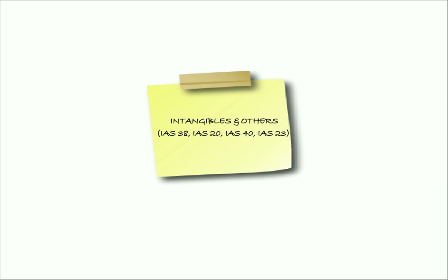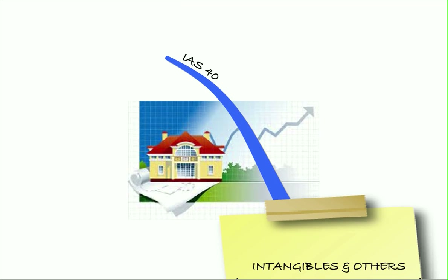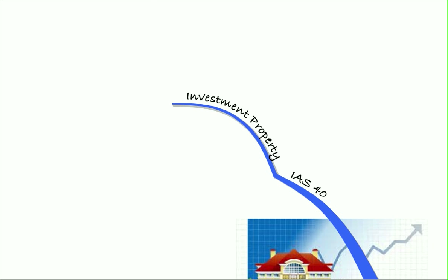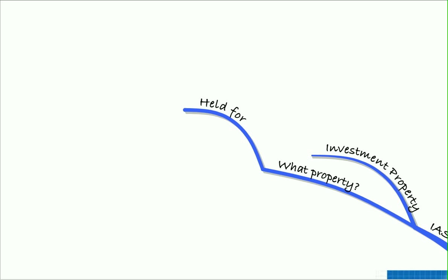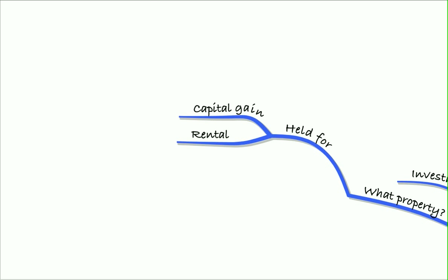Hello and welcome to our recap of our lecture on intangible assets and others. We've got a few standards here that we looked at, starting off with IAS 40, which was investment property. Remember, what property are we looking at here? Investment property is property that's held for capital gain or to rent out to others.